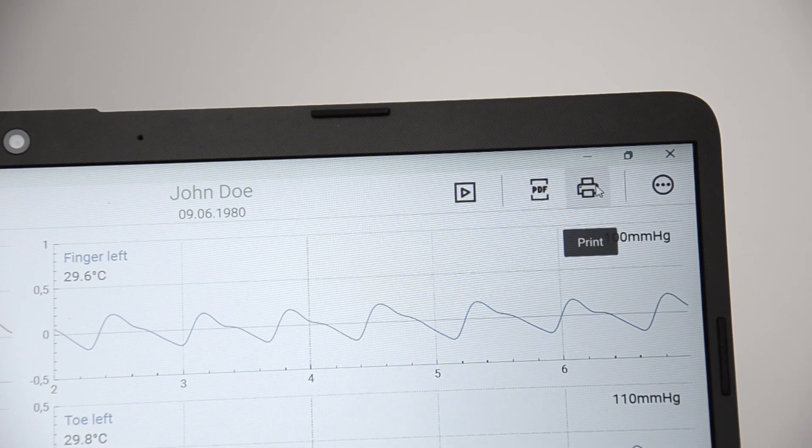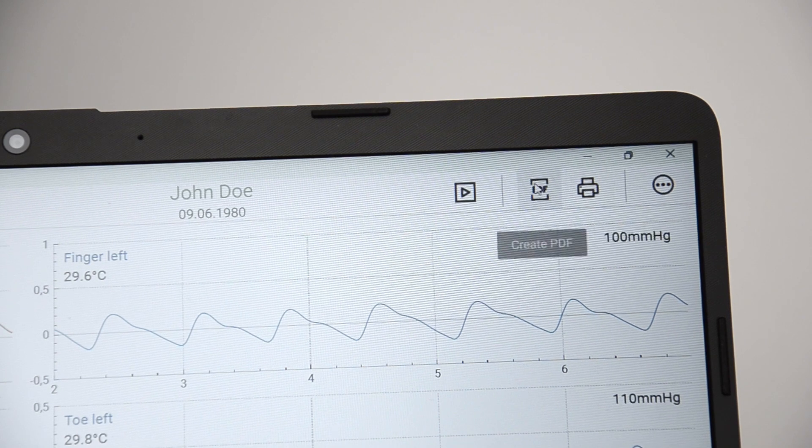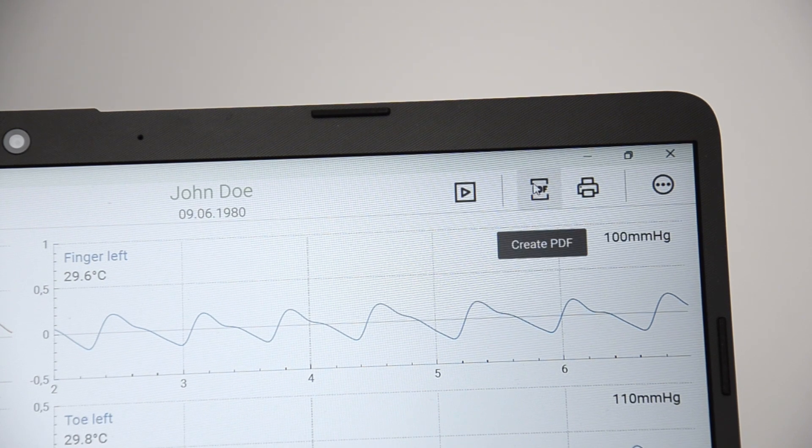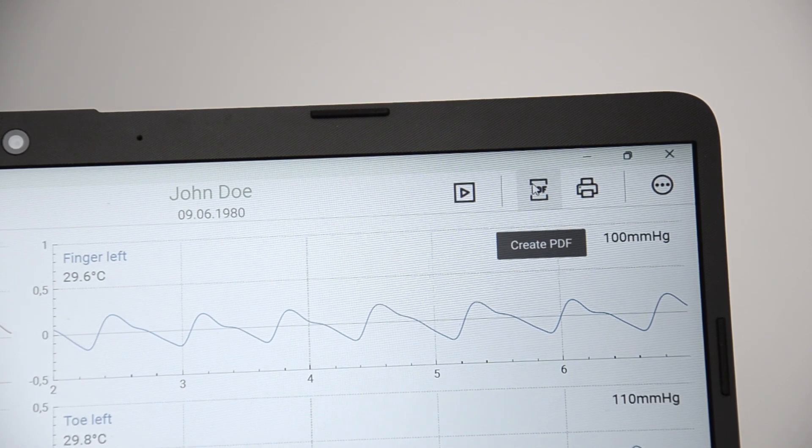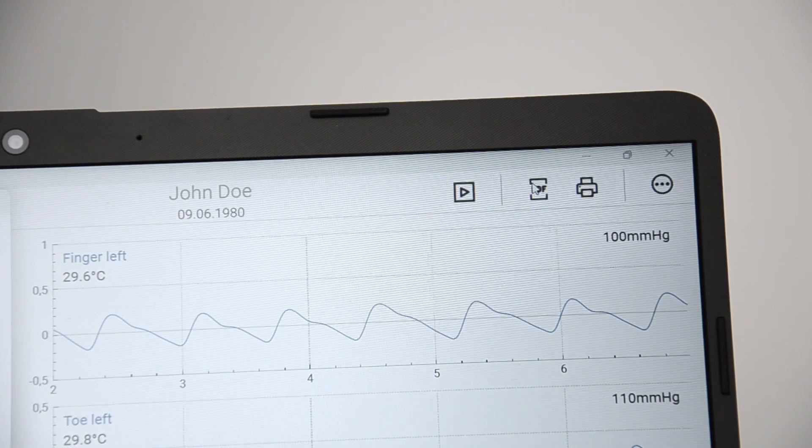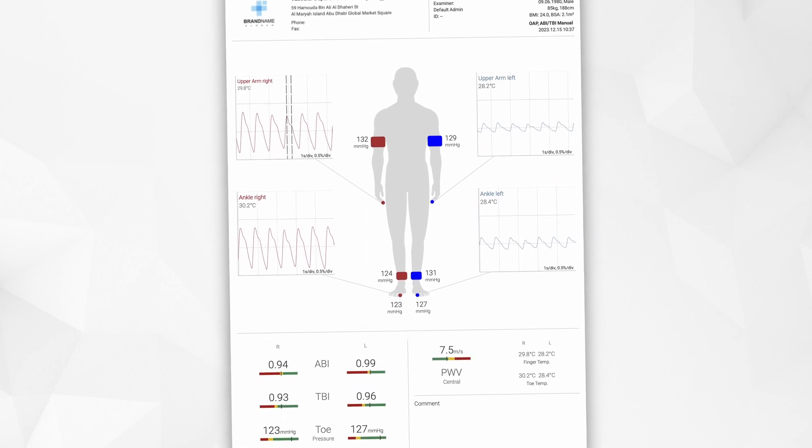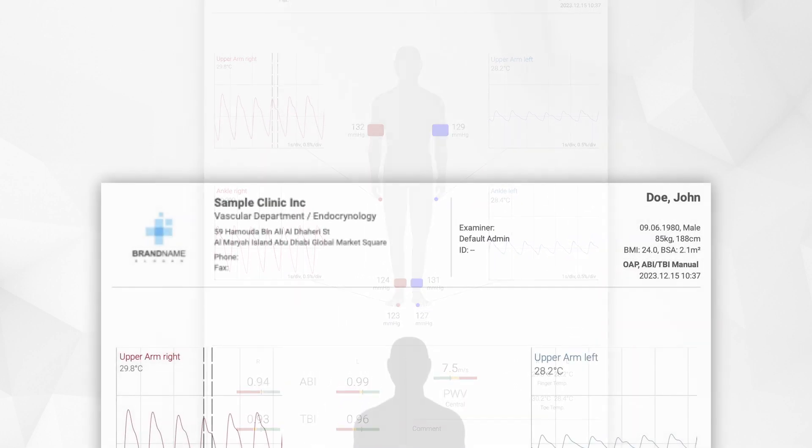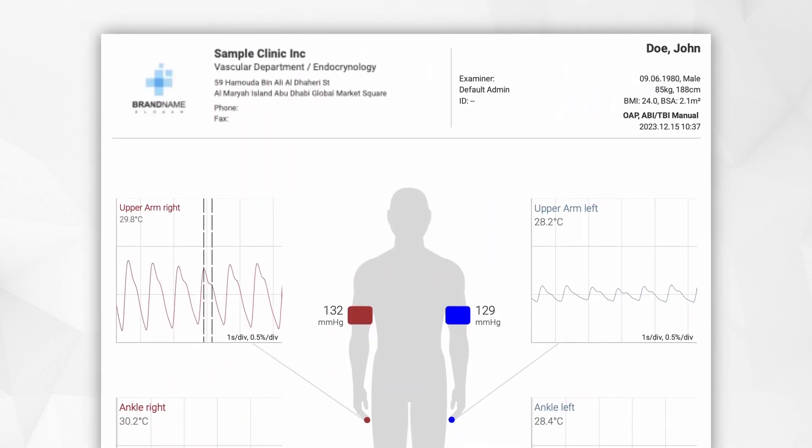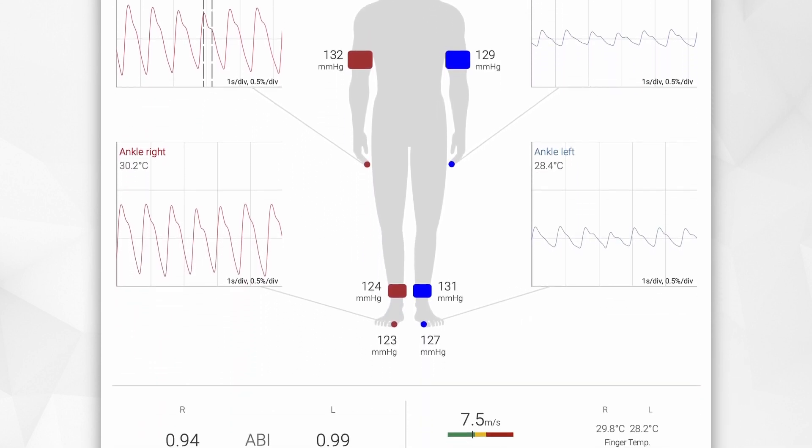You can directly print the report or export a PDF document. Optionally, a DICOM or HL7 interface can be configured. The results of the measurement are displayed in a single page report. It is easy to read and can be configured with your custom logo.